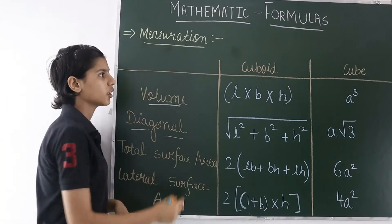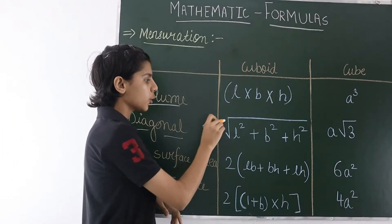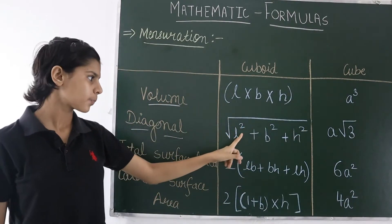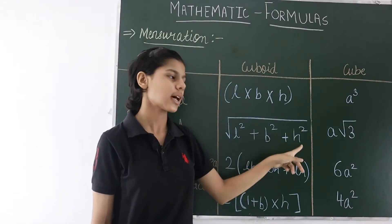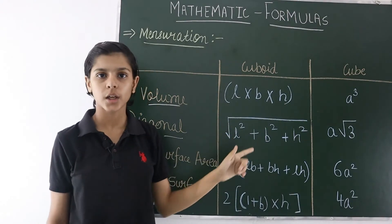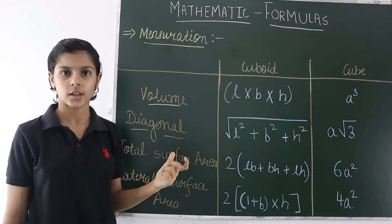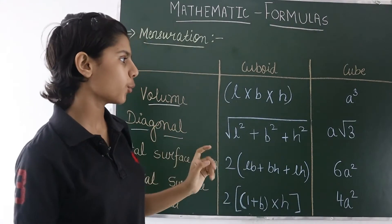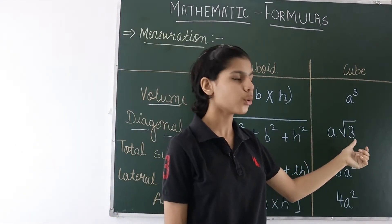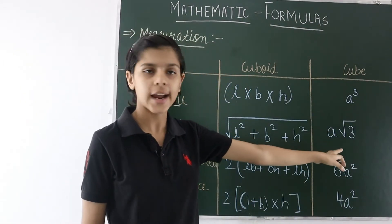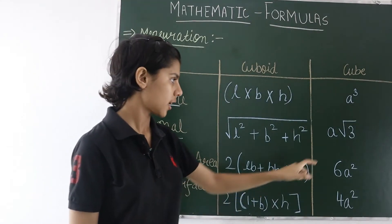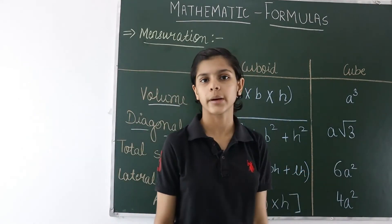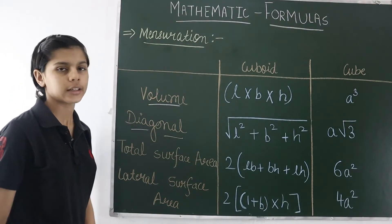For the diagonal of a cuboid, the formula is under root of (L squared plus B squared plus H squared). We add the squares of the length, breadth, and height, then take the square root to get the diagonal length of the cuboid. For the diagonal of a cube, the formula is A into under root 3. The side of the cube is multiplied by under root 3 to give the diagonal.